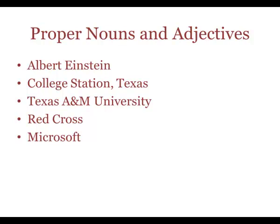These not only include specific people's names such as Albert Einstein, and place names such as College Station, Texas, but also institution names such as Texas A&M University, organization names like the Red Cross, and brands such as Microsoft.